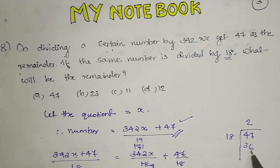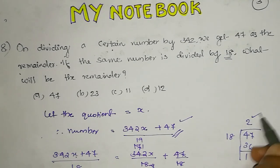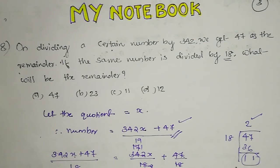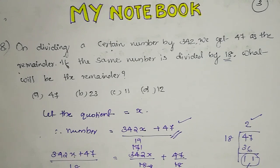36, and then 2 — quotient is 11 remainder. So, 11 is the remainder.